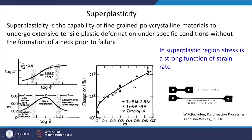In the superplastic region, stress is a strong function of strain rate — that is what we call strain rate sensitivity. When you plot log of strain rate versus log of sigma, in the superplastic window the slope is quite high. This slope m starts decreasing where power law breakdown occurs, and at higher strain rates you move towards creep-type deformation. The m value is usually more than 0.4 in the superplastic window.